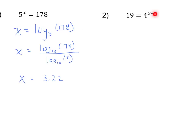Let's look at a more complicated one. It's still going to be the same basic principle. Since we don't know the exponent, we're going to need a logarithm, and our logarithm has to be equal to our exponent. In this case, our exponent is the whole thing — x minus 2. So that x minus 2 has to be equal to the logarithm. x minus 2 is the exponent that I raise my base of 4 to to get 19. So x minus 2 would be equal to log base 4 of 19.